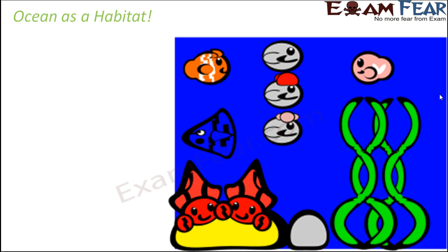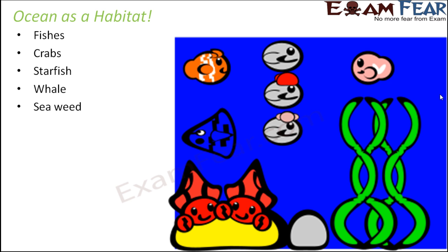Now let us talk about ocean as a habitat. What are the different types of organisms that we see in an ocean? In oceans, we can find fishes — from small tiny fishes to huge fishes like whales, sharks, and dolphins. You can also find organisms like crabs, starfish, whale, and seaweed. Seaweeds are tiny organisms which tend to be present in the sea.